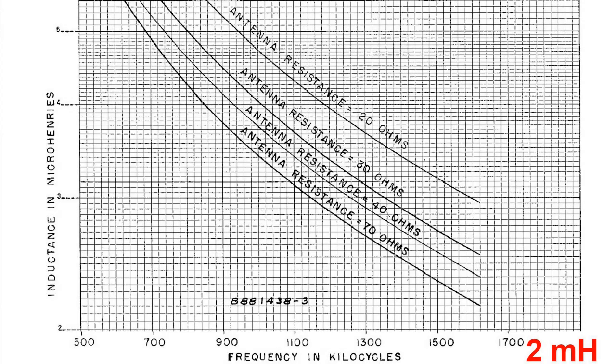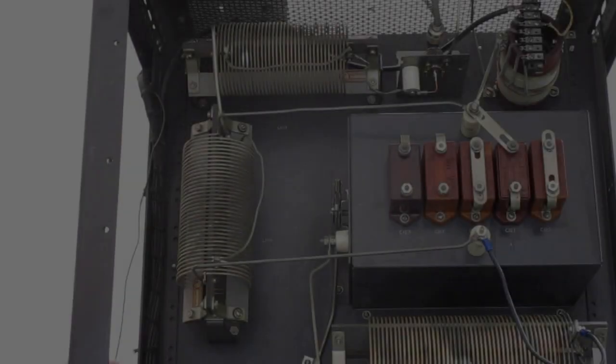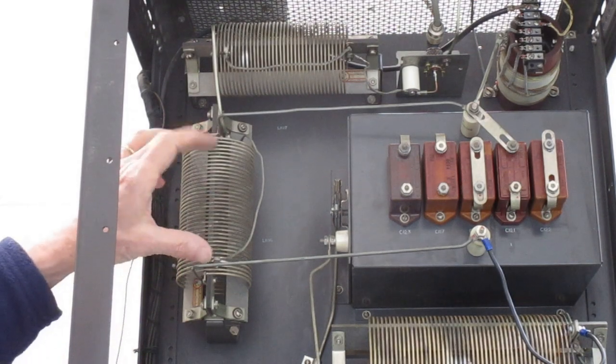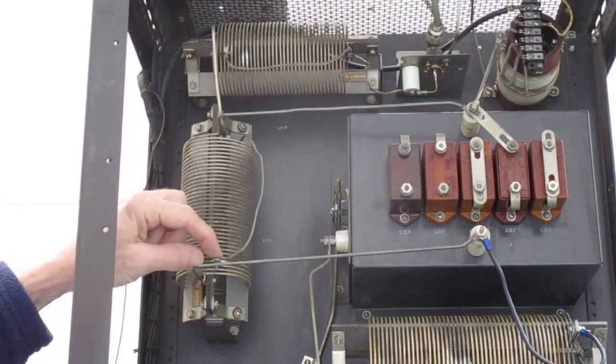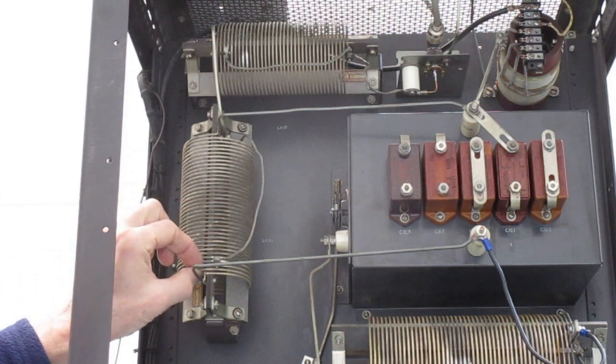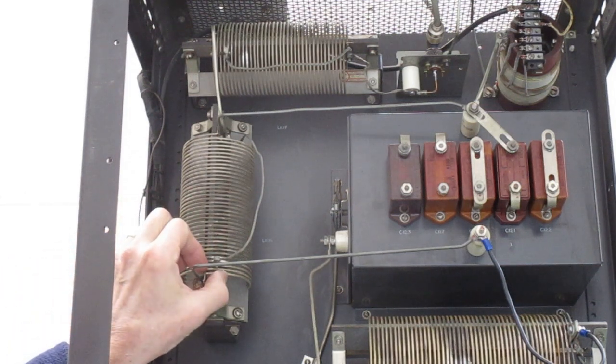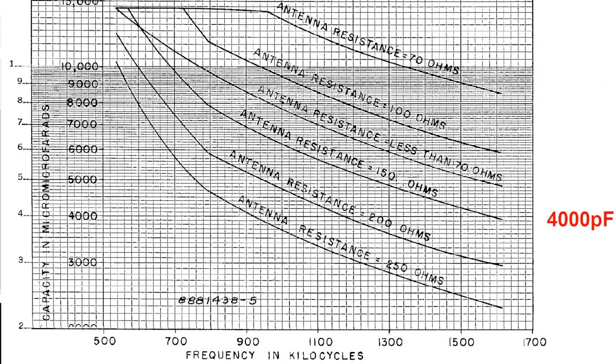I also need to select the inductance for the L network that follows the tank circuit. This L network will transform the impedance of the tank circuit to the impedance of the antenna. I only needed two turns for this, so I shorted out all the turns except for two on this coil. And we'll also need to select the capacitance of the L network.